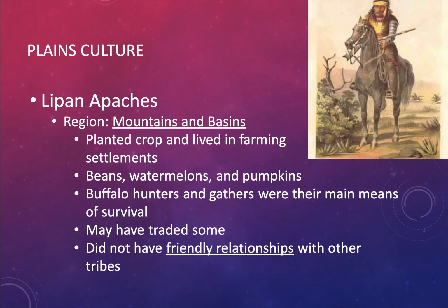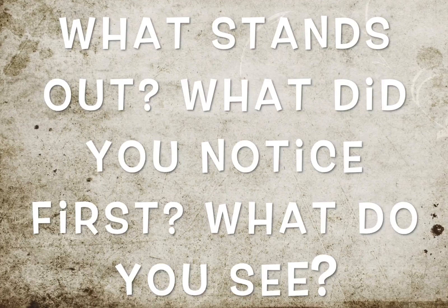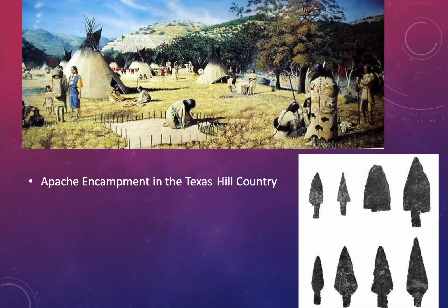The Lipan Apache are known for their aggression. They lived in the Mountains and Basins region but moved into the southern plains. They planted crops — beans, watermelons, and pumpkins — and lived in farming communities part of the year, but buffalo hunting and gathering was their main means of survival. They rarely had friendly relationships with other tribes due to their aggression, though that aggression was only directed toward outsiders. This picture of an Apache encampment in the Texas Hill Country shows details worth observing — take note of what stands out and be ready to discuss it in class.